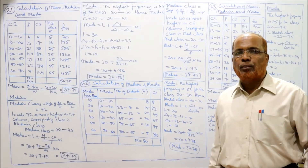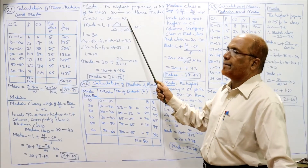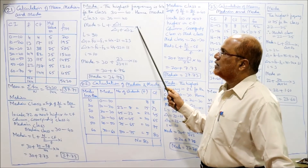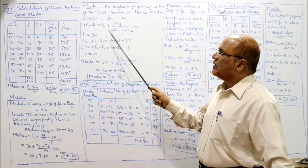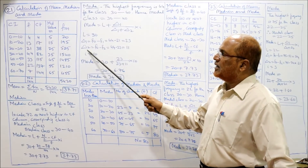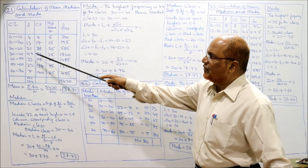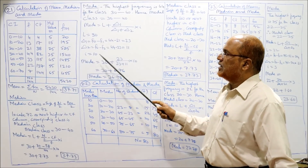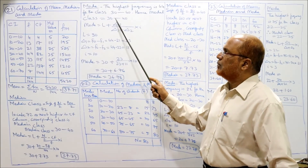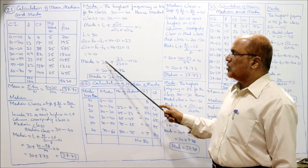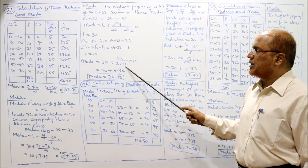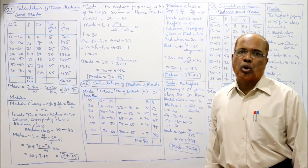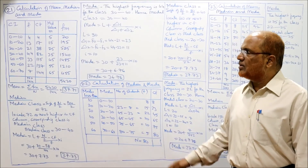Mode = L + [Δ1/(Δ1+Δ2)] × I. Lower limit = 30, Δ1 = F_modal − F_pre = 44−21 = 23, Δ2 = F_modal − F_post = 44−33 = 11 (leaving 7 for the formula). I = 10. Mode = 30 + [23/(23+7)] × 10 = 30 + 7.67 = 36.76. All three averages have been calculated for problem 21.